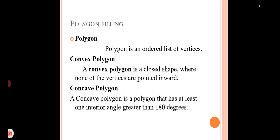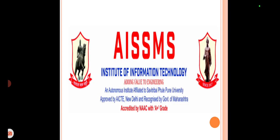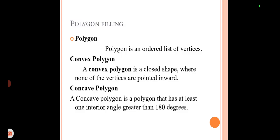Here we are learning about Polygon Filling. What is a polygon? A polygon is an ordered list of vertices. Polygons are broadly divided into two types: Convex Polygon and Concave Polygon.